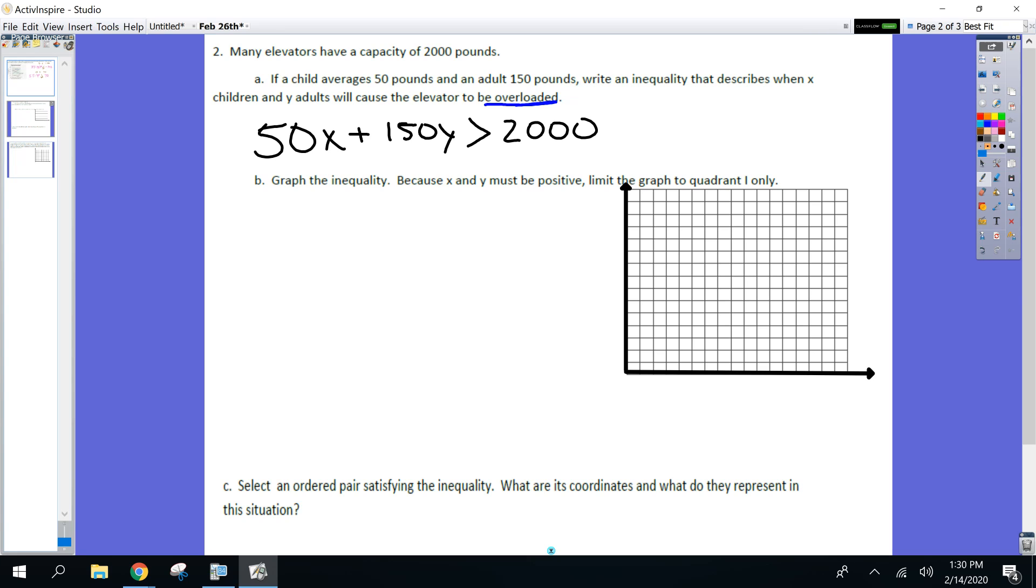We okay with the inequality there? You're only going to write that one. And now we're going to graph it. X and Y. Why must they be positive? Can't have a negative number of kids or adults, right? So instead of having this type of graph, we're only going to do quadrant one. That's where X and Y are both positive.